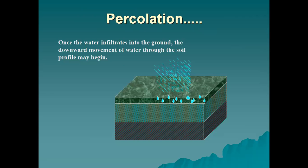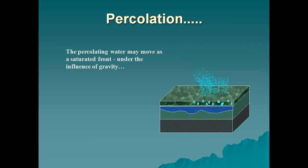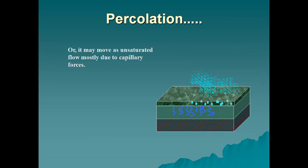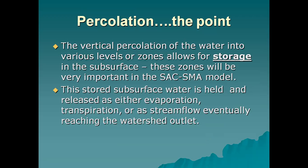Once the water infiltrates into the ground, the downward movement of water through the soil profile begins — this is percolation. The percolating water may move as a saturated front under the influence of gravity, or it may move as unsaturated flow mostly due to capillary forces. The vertical percolation of water into various levels or zones allows for storage in the subsurface. These zones will be very important in the Sacramento SMA model. This stored subsurface water is held and released as either evaporation, transpiration, or stream flow, eventually reaching the watershed outlet.